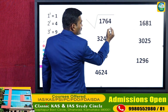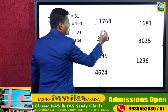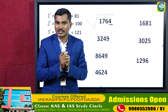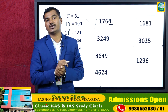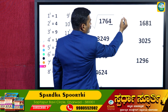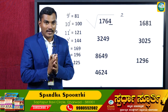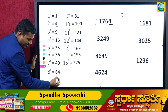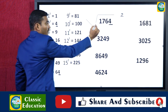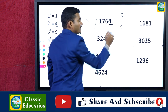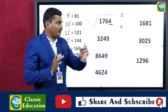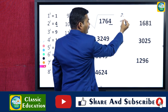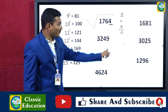First, always look at the unit digit of the number. For example, if the unit digit is 4, the answer's unit digit will be 2, because 2 squared is 4. But there is another possibility: 8 squared is 64, so the unit digit could also be 8. There are two possibilities. Always remember the sum of the two possible unit digits will always be 10.